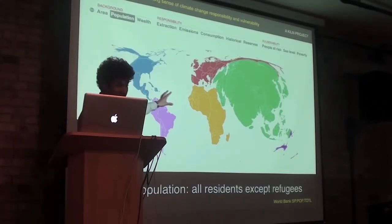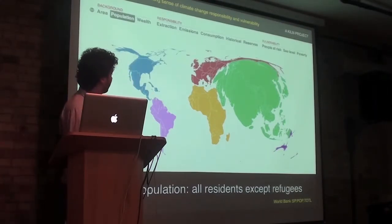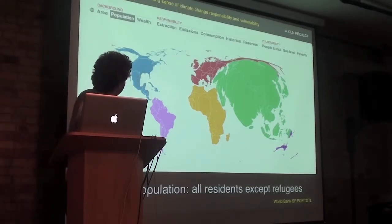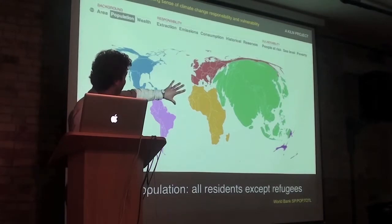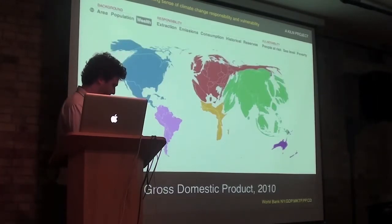The population map — again not hugely surprising perhaps, but interesting to see it squished out like that. Asia really is very, very dominant over there in the population map.